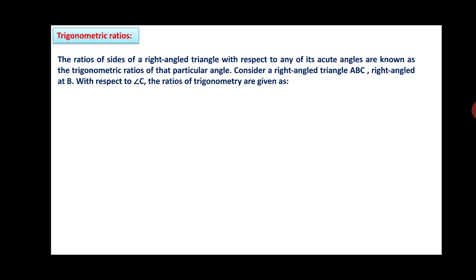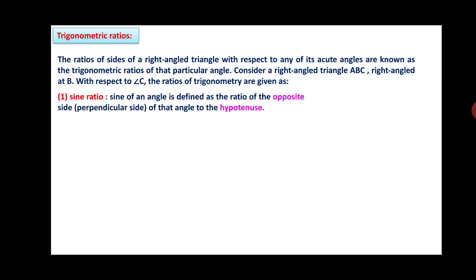Now let us see what trigonometric ratios are. The ratios of a right-angle triangle with respect to any of its acute angles are known as the trigonometric ratios of that particular angle. Consider a right-angle triangle ABC, right-angled at B. With respect to angle C, the trigonometric ratios are defined as follows.